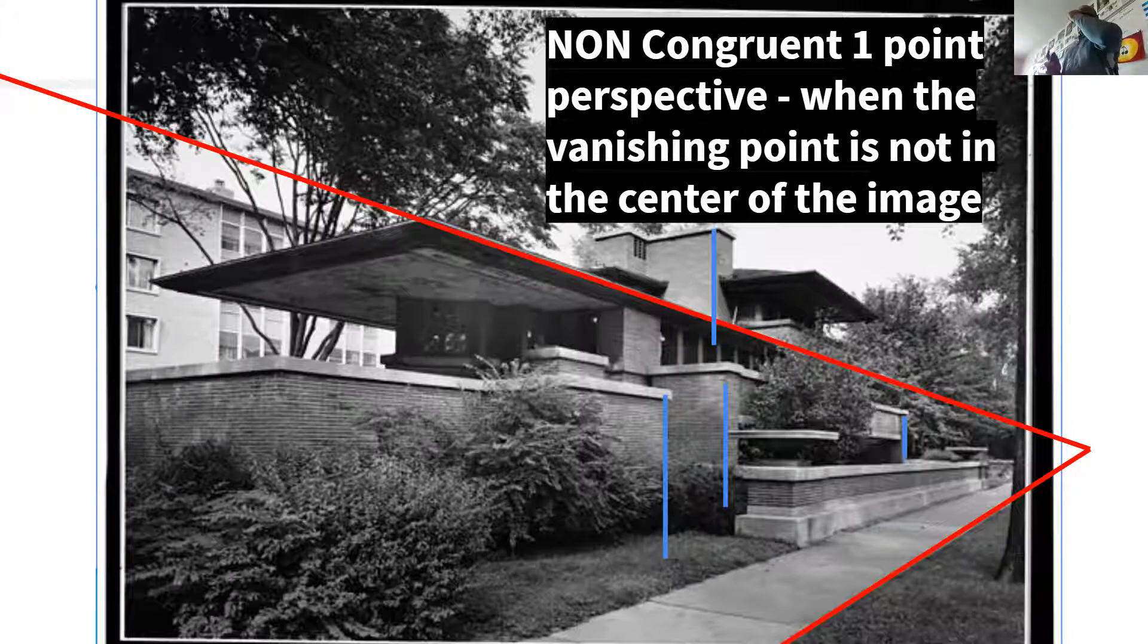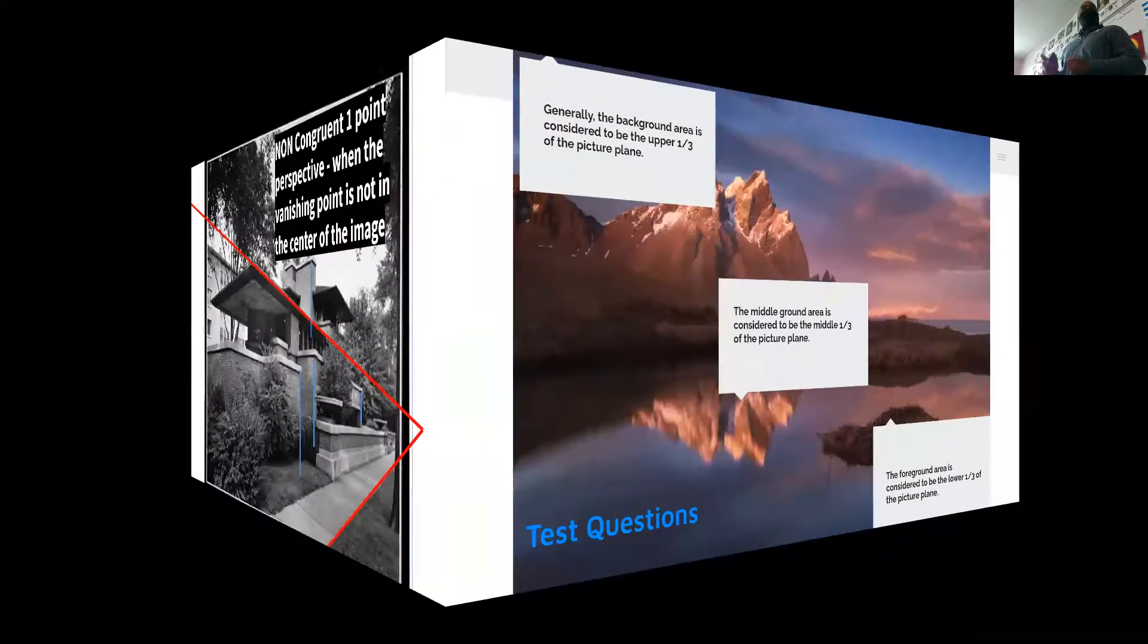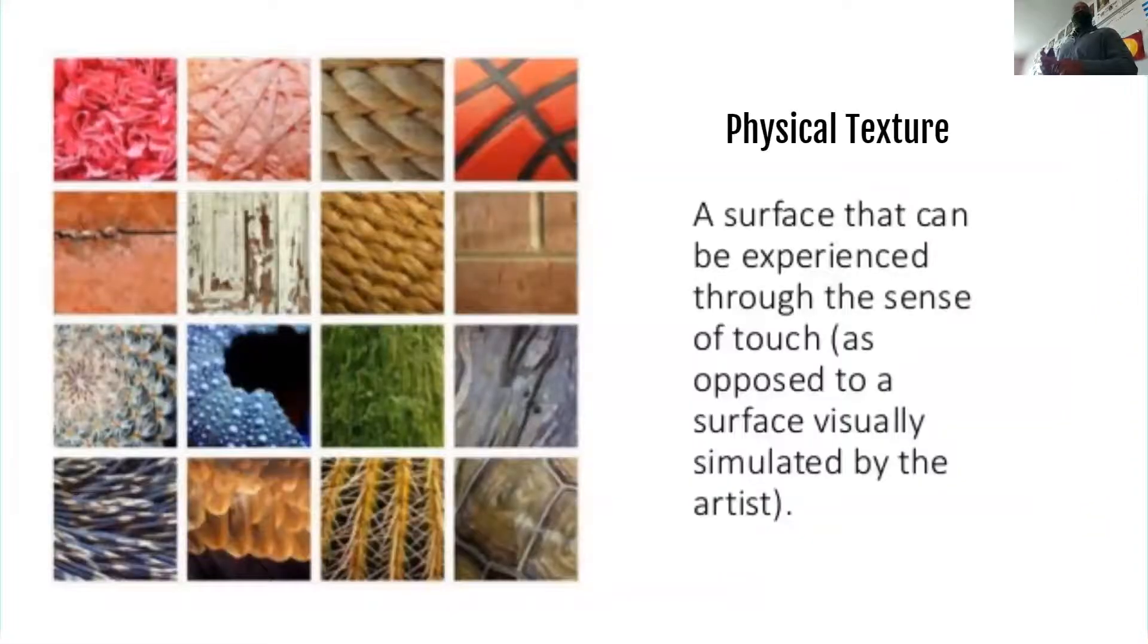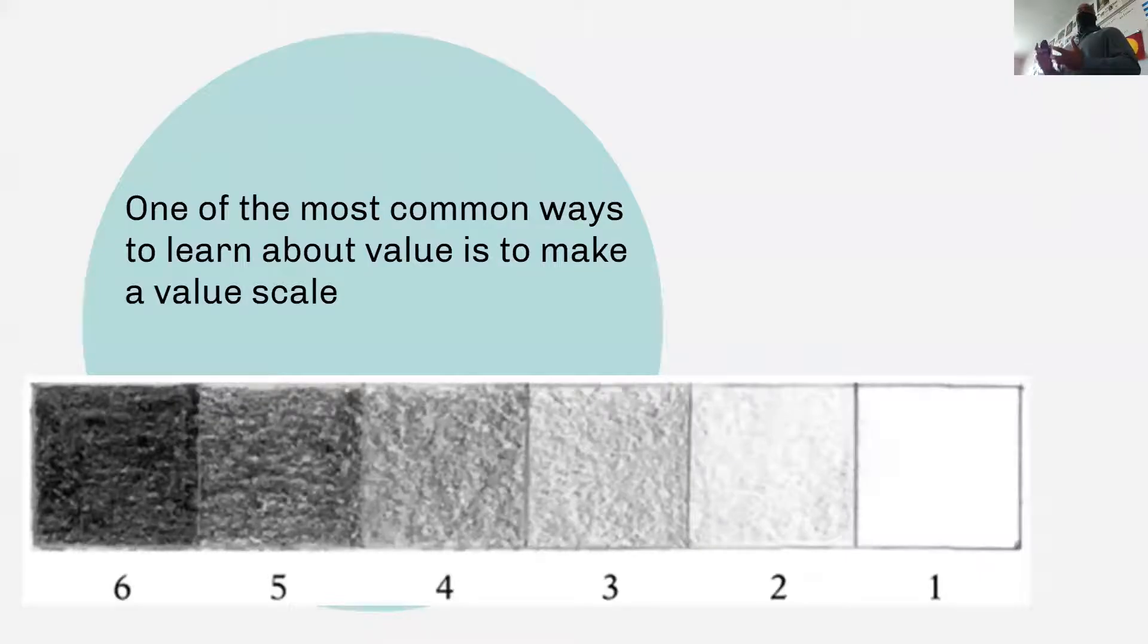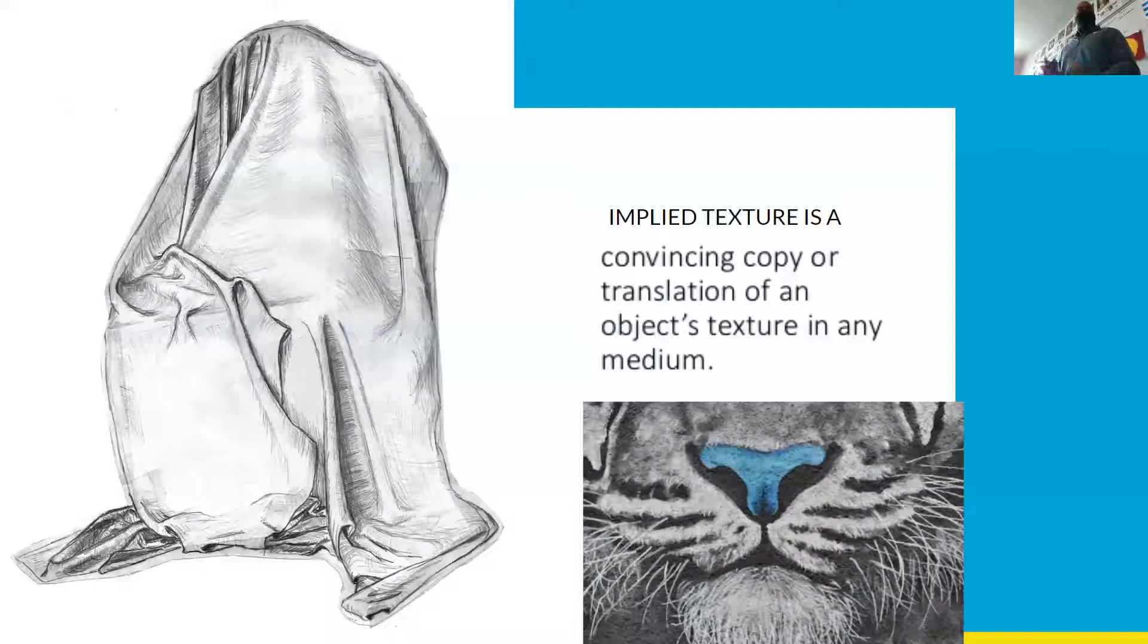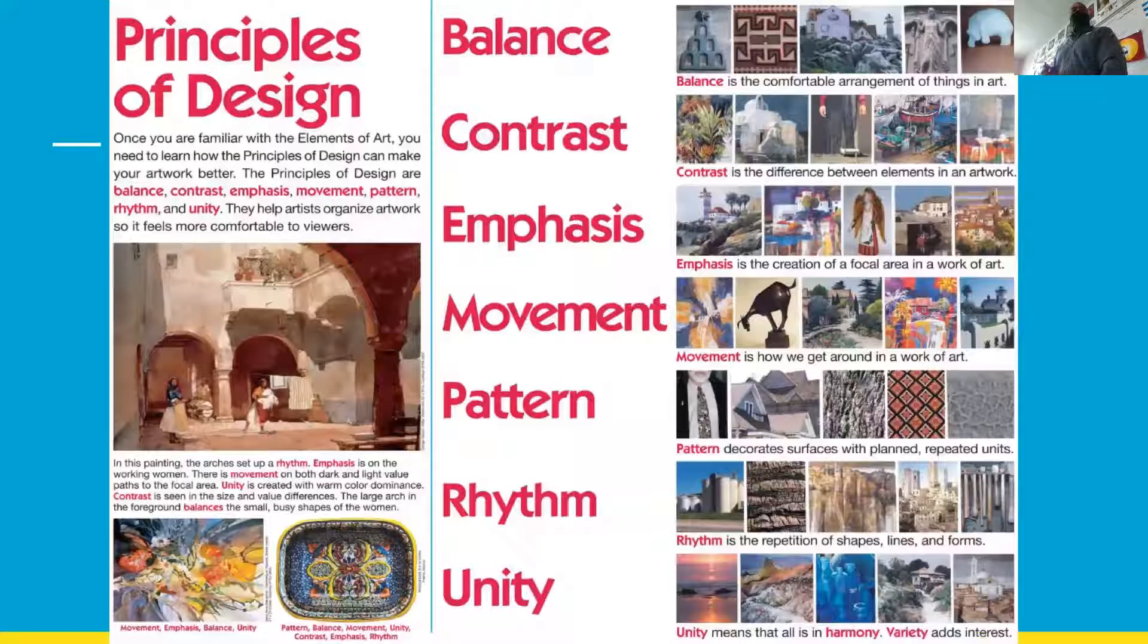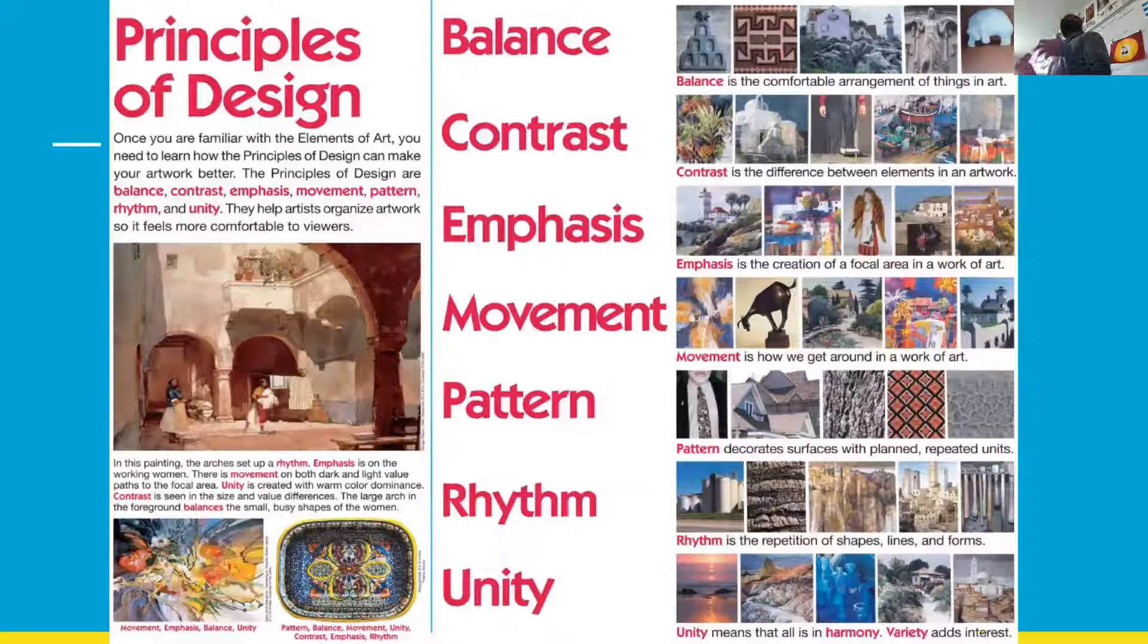Contrast is the difference between dark and light. Here's another example for texture. We've already been over form. The definition for surrealism is an art movement created to explore the unconscious mind, such as dreams or a dreamlike nature.